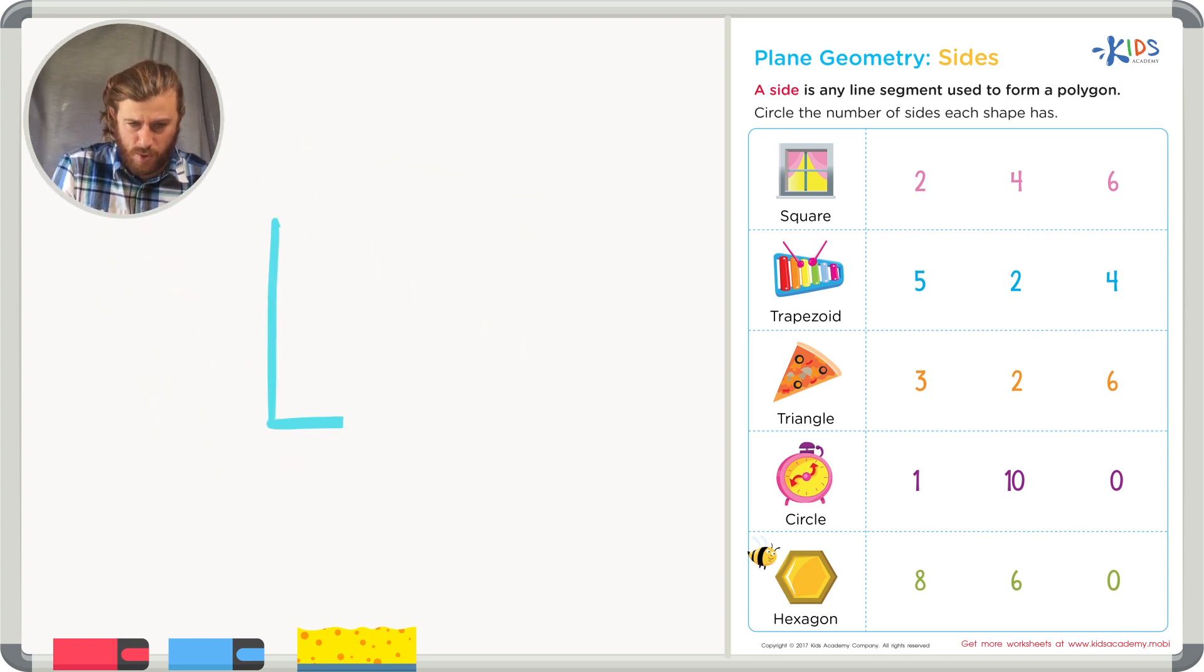First thing I'm going to do is draw a square. And I'll count the number of sides in my square. Let's count together. One, two, three, four sides.